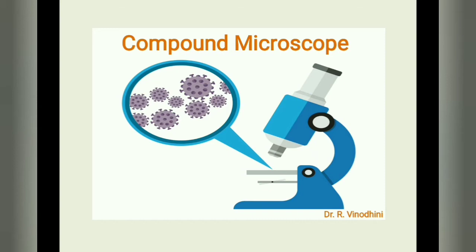The microscope is a common appliance used in all biological laboratories. There are numerous varieties of microscopes serving different purposes, and more sophisticated and powerful ones are being designed and developed. In this video we are going to learn in detail about the components of the compound microscope and their working principle. Let's get started.